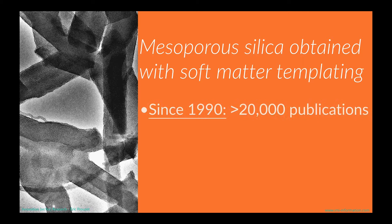Let's go back to mesoporosilica. This type of well-ordered mesoporosilica was actually discovered — or rediscovered — in the 1990s, especially with a famous paper published in the journal Nature in 1992. That was a real revolution about the way to make porous materials. And since the 1990s, there have probably been around 20,000 publications published on this domain or relevant areas.